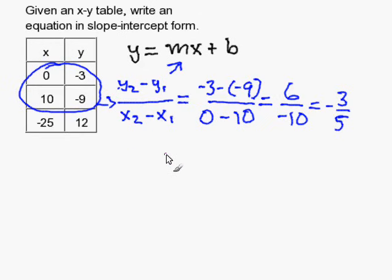I'm going to rewrite my equation: y equals negative 3 over 5x plus b.